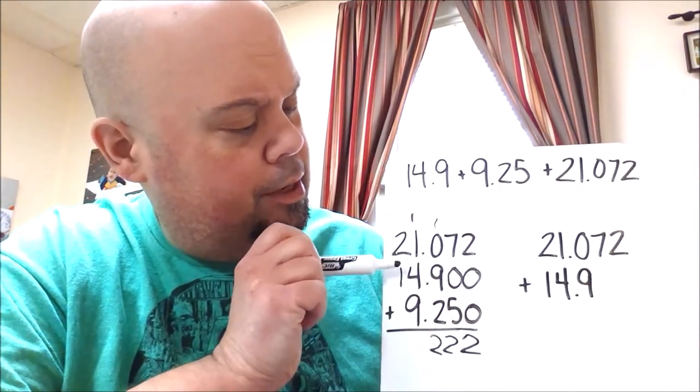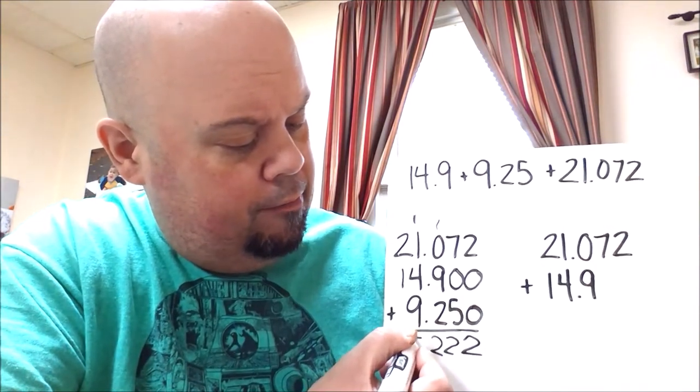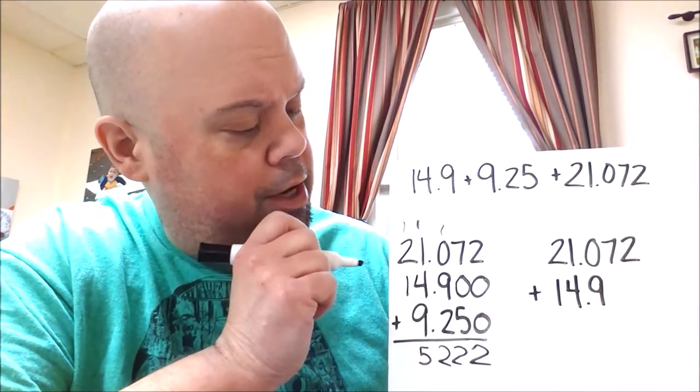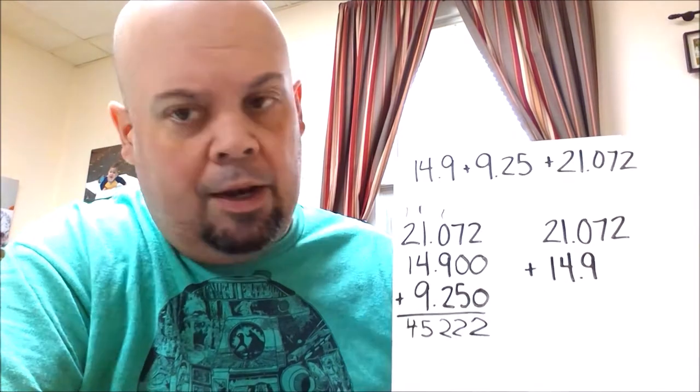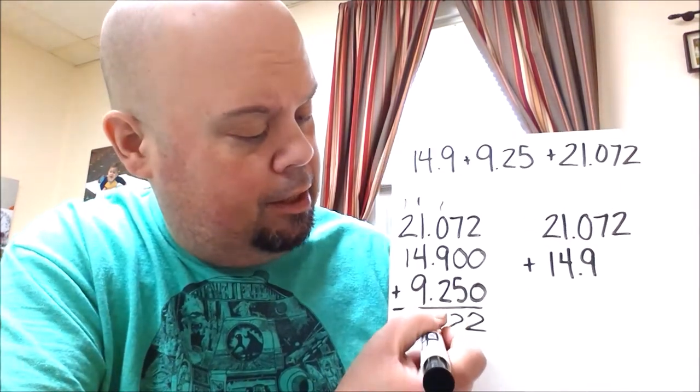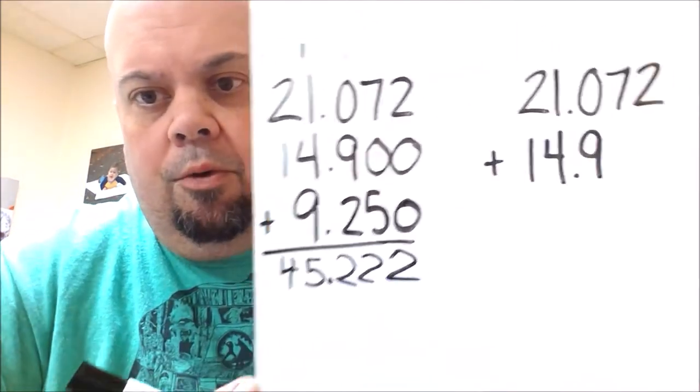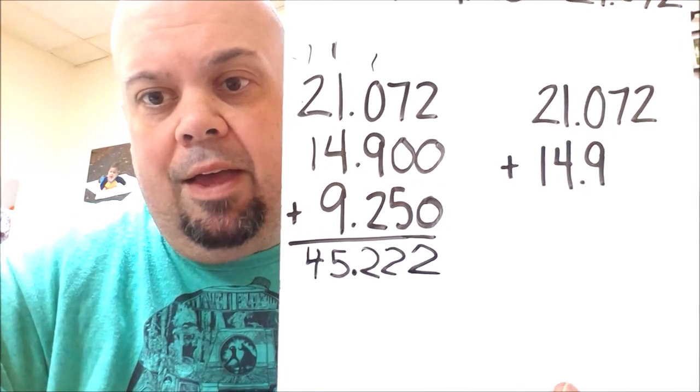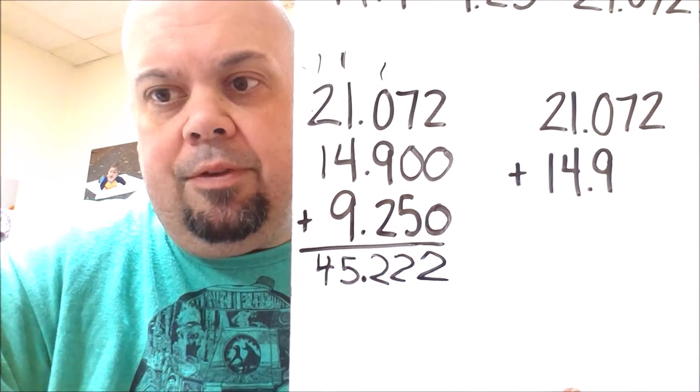1 plus 1 is 2. Plus 4 is 6. Plus 9 is 15. Carry your 1. 1 plus 2 is 3. 3 plus 1 is 4. And now you would put your decimal in in line where it is up above. It's still in the same order as the other decimals that are there. So our answer is 45 and 222 thousandths.